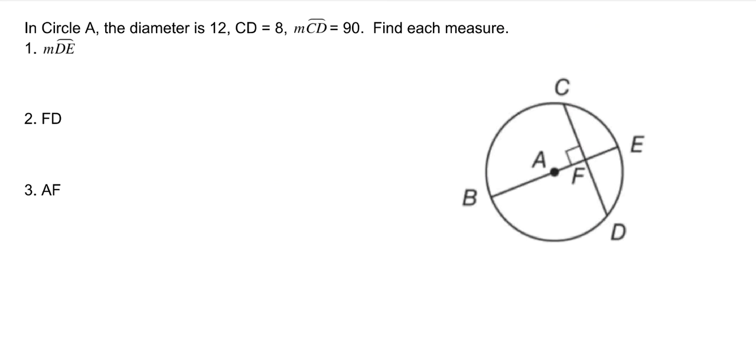All right, in circle A, the diameter is 12. So we know that BE is 12. We know that CD is 8. And we know the measure of CD is 90 degrees. Okay, so we need to find the measure of DE. Okay, so if you remember, any time that a chord is perpendicular to the radius or the diameter, then that splits this in half, but it also splits this in half. So because CD is 90, then the measure of DE is half the measure of CD, which is half of 90. So it's 45.